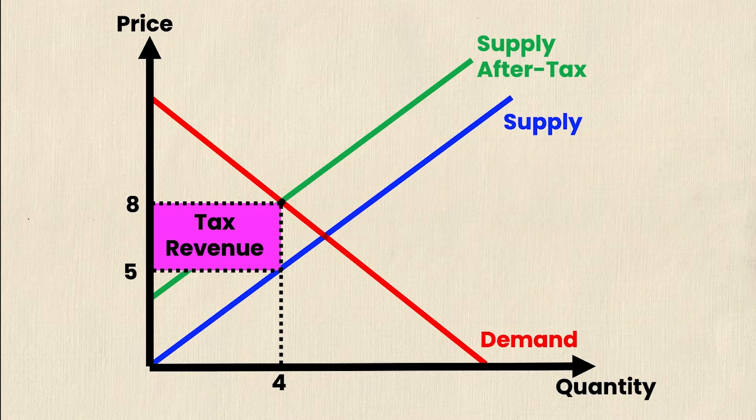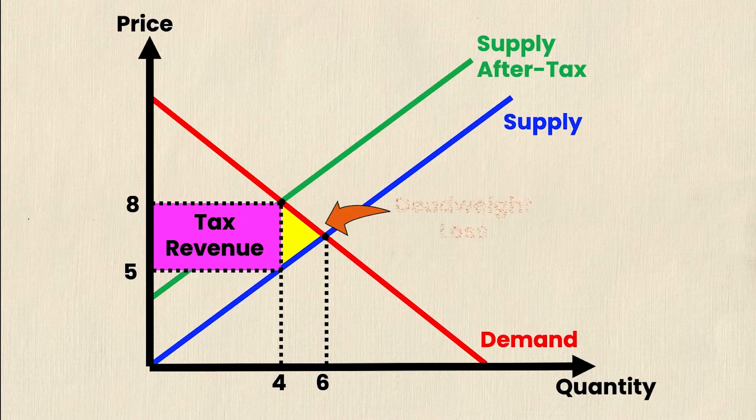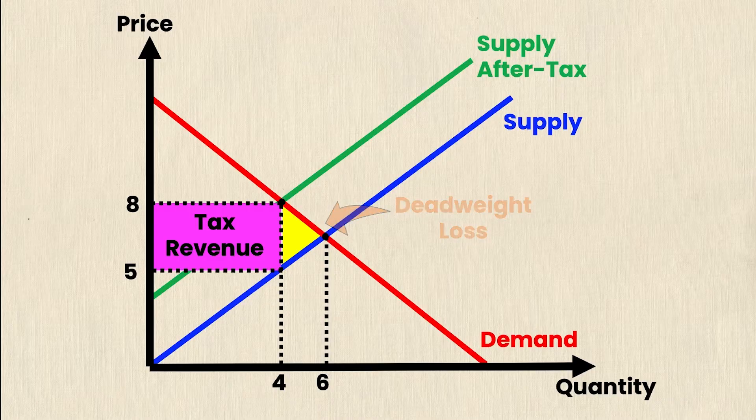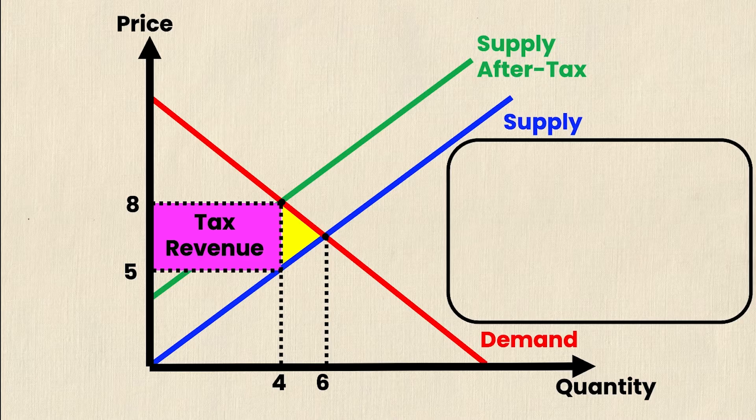Now in part 1, we also talked about something called deadweight loss. And we know that deadweight loss occurs because our original equilibrium quantity was 6 and 4 is strictly less than 6, which leaves us with this little triangle right here, which is known as deadweight loss. How do we calculate it? Well, it's actually quite simple because it's just a triangle. And so the area of that triangle is going to be our deadweight loss amount.